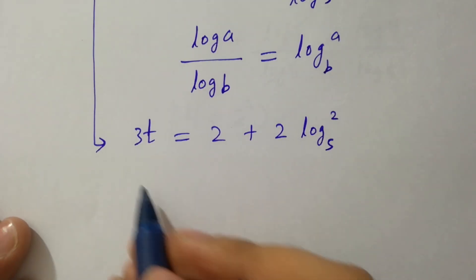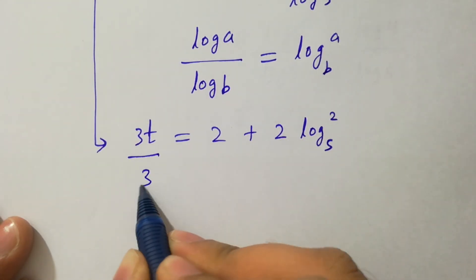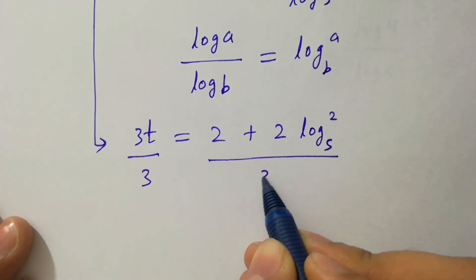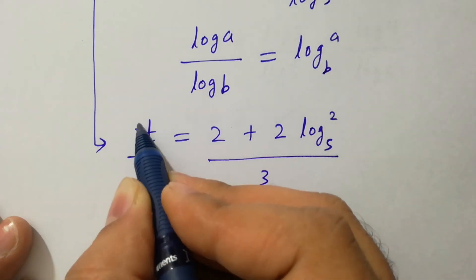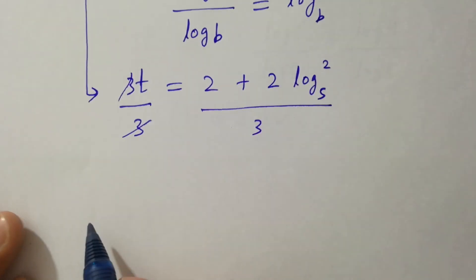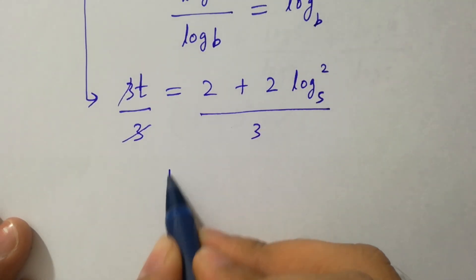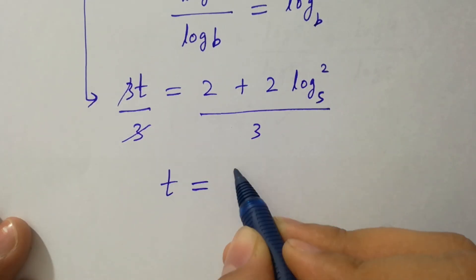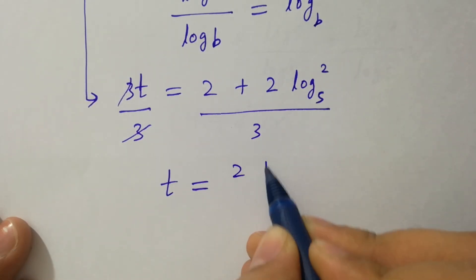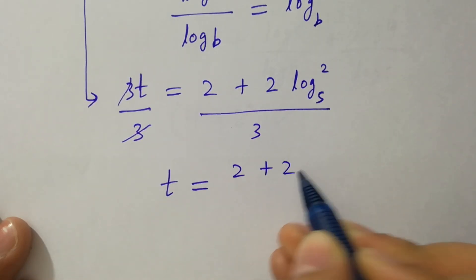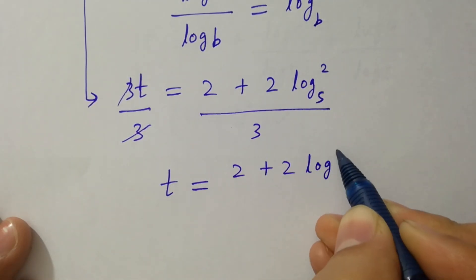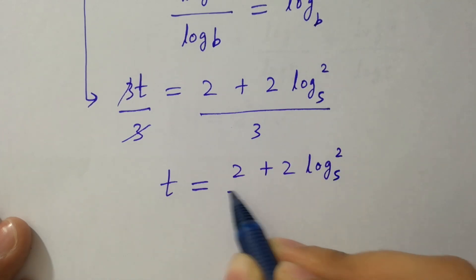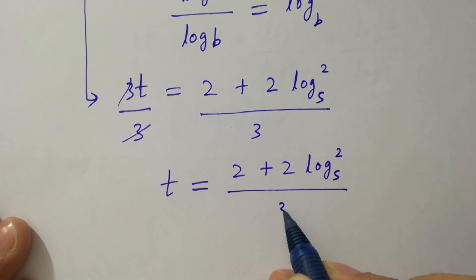To find t, divide by 3 on both sides. 3 cancels and we get the value of t equal to 2 plus 2 log 2 to the base 5, all over 3.